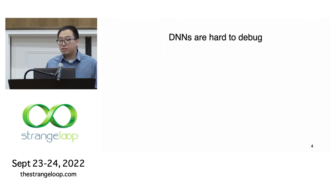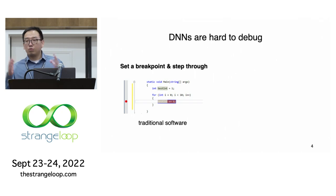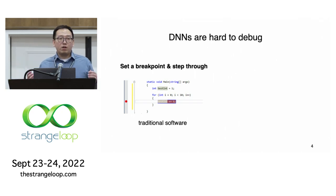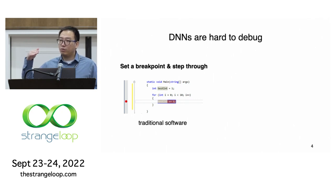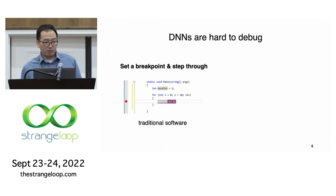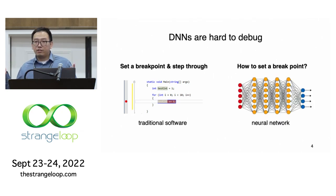This brings a lot of challenges to debugging deep learning models. In the old world of traditional software, if we want to debug an error, we basically set a breakpoint and step through each line of code to figure out the root cause. But in deep learning, for a neural net, how do we even set a breakpoint?